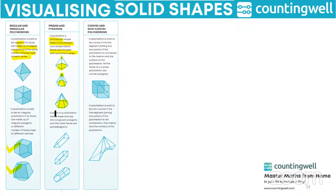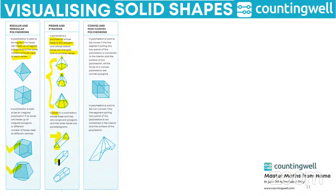Now let us see what is a prism. A prism is a polyhedron whose base and the top are congruent polygons and the other faces are parallelograms. For the first example, the base is a triangle, the top is also a triangle — they are congruent — and the other three faces are parallelograms. Here also the top and base are congruent squares and the remaining faces are rectangles. For the third example, the base and top are pentagons with five rectangles as the remaining faces.